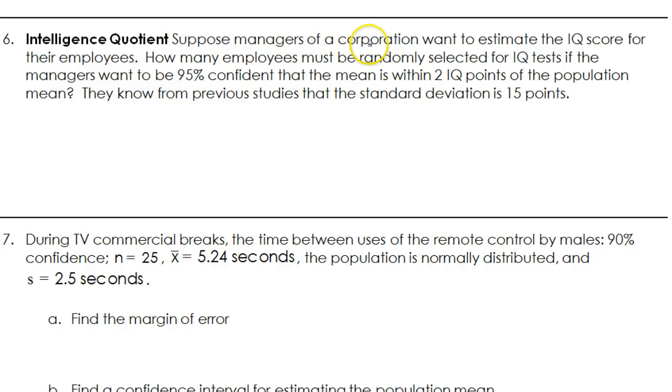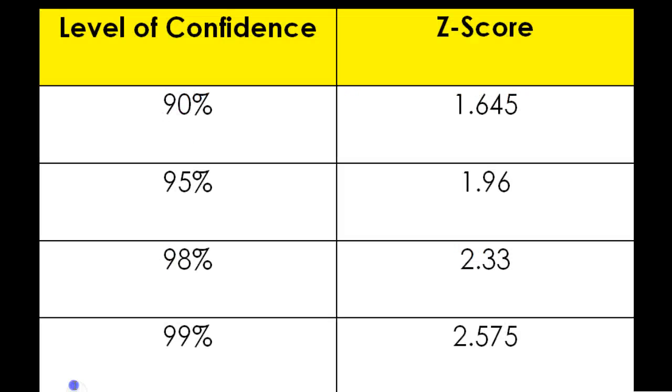Intelligence quotient. Suppose managers of a corporation want to estimate the IQ score for their employees. How many employees must they randomly select for IQ test if the managers want to be 95% confident that the sample mean is within two IQ points of the true population mean? They know from previous studies that the standard deviation is 15 points. I got the z-score because we want a 95% confidence level, and that's 1.96.